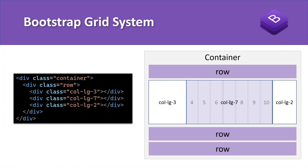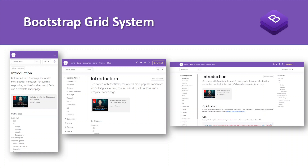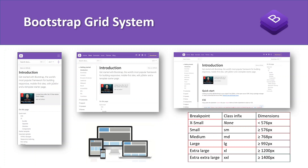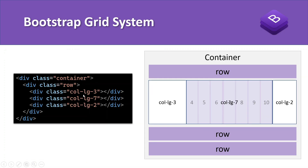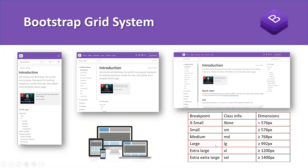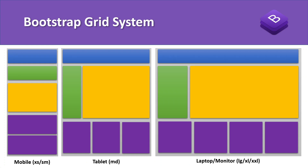For different screen sizes we need different layouts. Bootstrap has breakpoints: extra small, small, medium, large, extra large, and extra extra large. The class infixes are: none for extra small, 'sm' for small, 'md' for medium, 'lg' for large, and 'xl' for extra large. Let's look at a demo website layout to understand how layout changes across screen sizes.